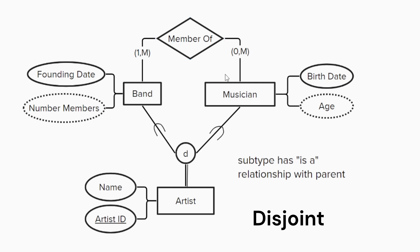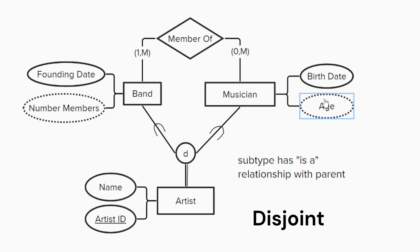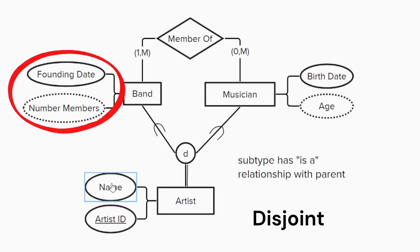Each musician is an actual person with attributes such as a date of birth and a derived attribute age, which does not need to be stored. We'll assume that the artist attribute name inherited by a musician is the full name of the musician, but this aspect of the model will be revised later. A band can have a distinct set of attributes as well, such as a founding date and a derived attribute for the number of members.